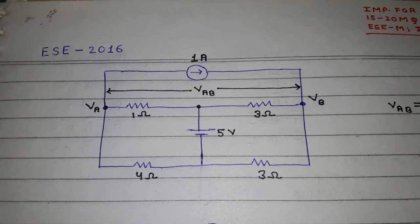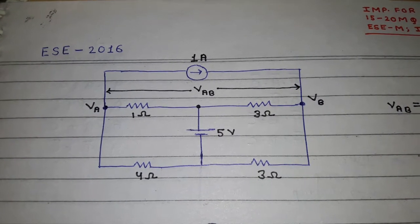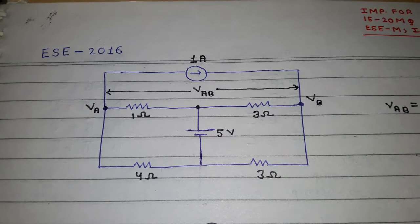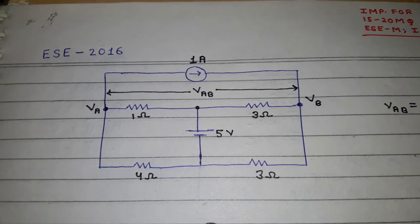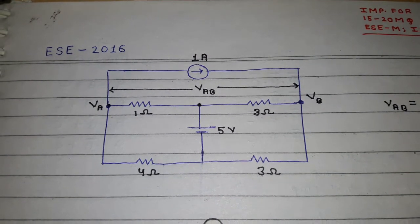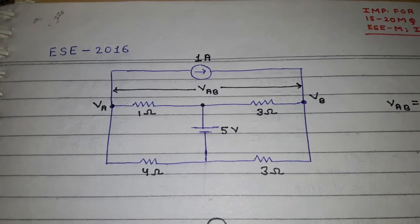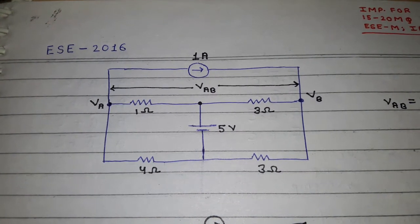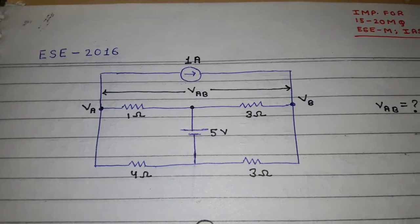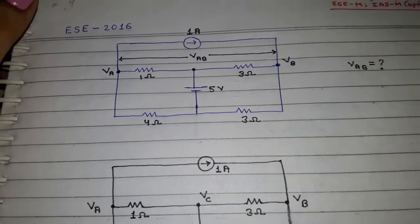There is a different process for this question because in previous questions we had one reference node and we had one equation. On solving that one equation we got the answer. But in this question we will have more than one reference node and more than one equation. On solving those equations we are going to get our answer.